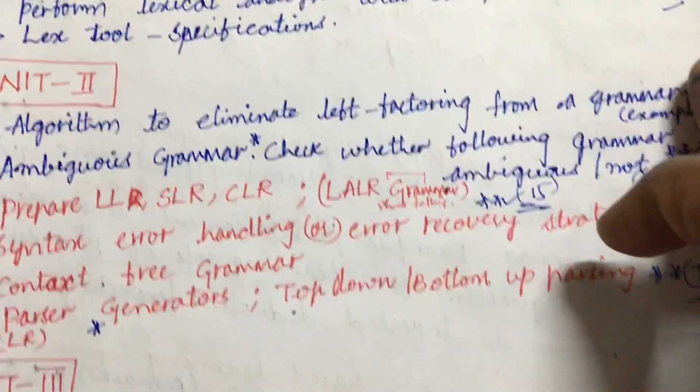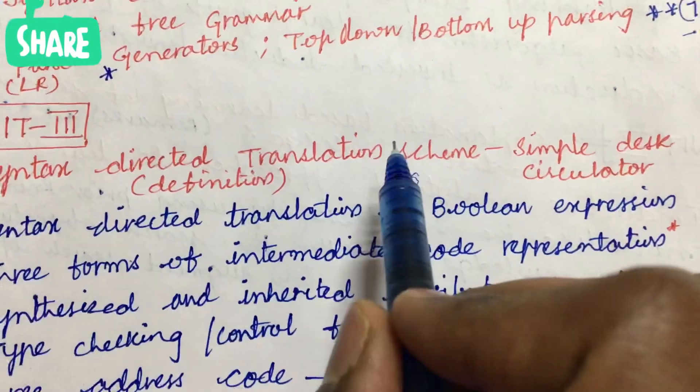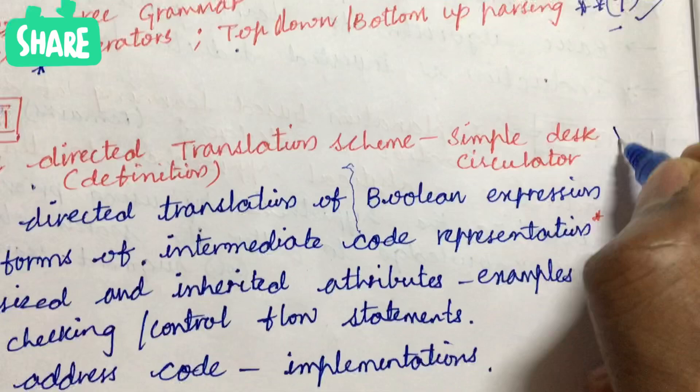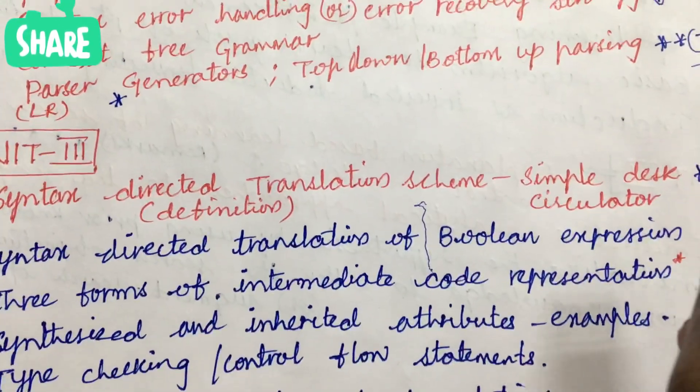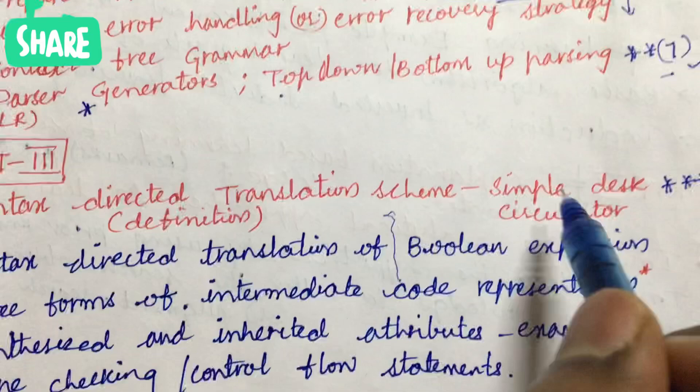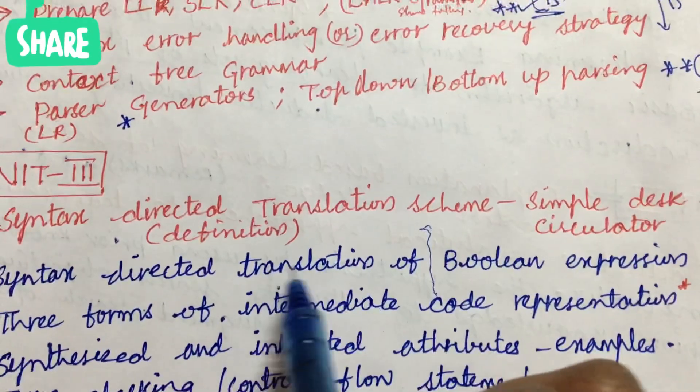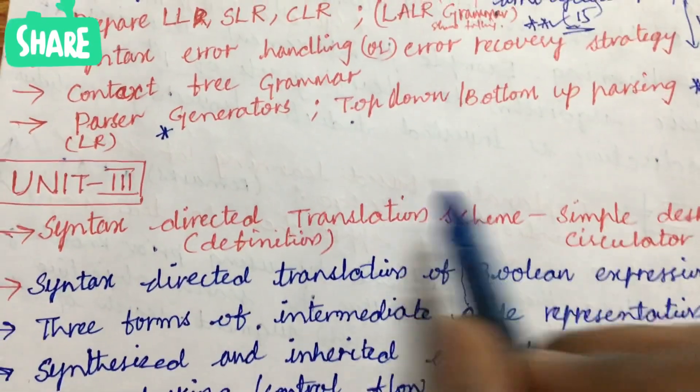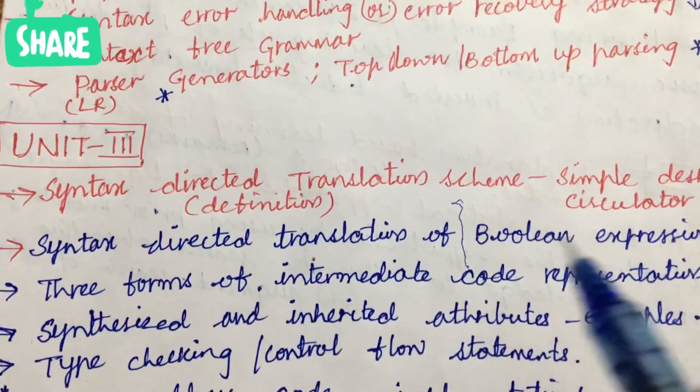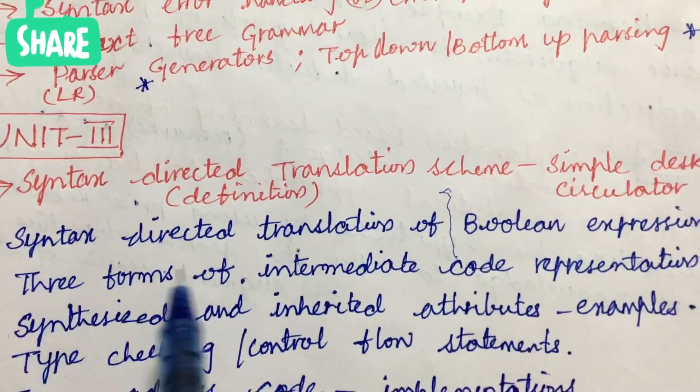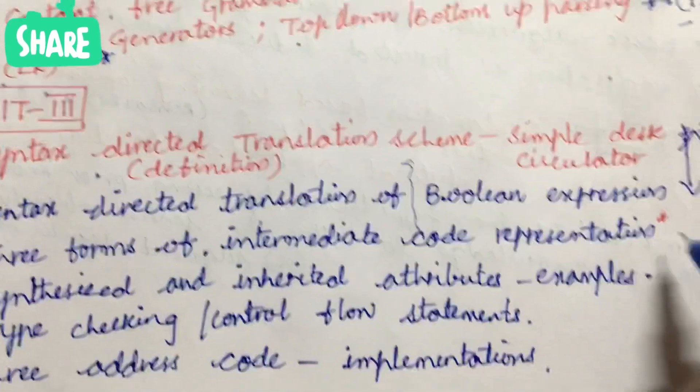Later, looking at the third unit, it is all about the syntax-directed translation scheme. This is also one of the gunshot questions asked several times. Again, we can expect related to the translation scheme of simple desk calculator or related to Boolean expression - very important and gunshot question. Dear students, from these two topics one question will be asked for sure.